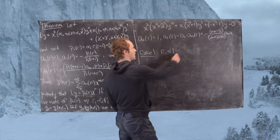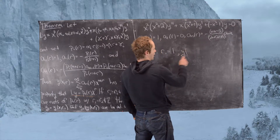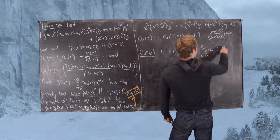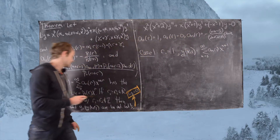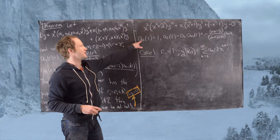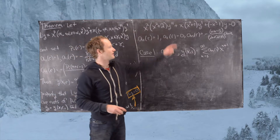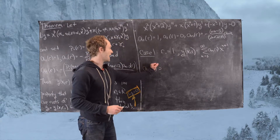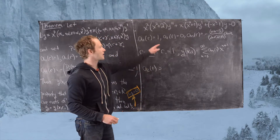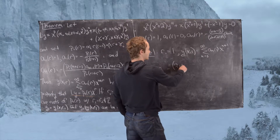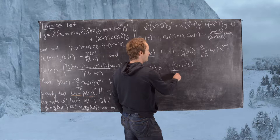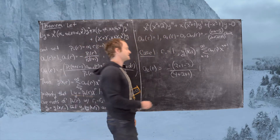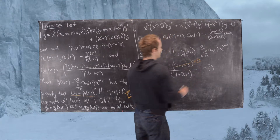For R = R1 = 1, the solution takes the form y(x, 1) = sum from n=0 to infinity of a_n(1) times x^{n+1}. We recall that a0(R) = 1 and a1(R) = 0. Let's calculate the next term.